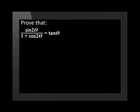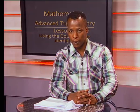This will take a bit of practice to get used to, so let's take a look at a few examples where we use these double angle formulas. Prove that sine 2 theta over 1 plus cos 2 theta is equal to tan theta. Remember that we must always indicate which side of the equation we are working with. In this case, we will start with the left-hand side.